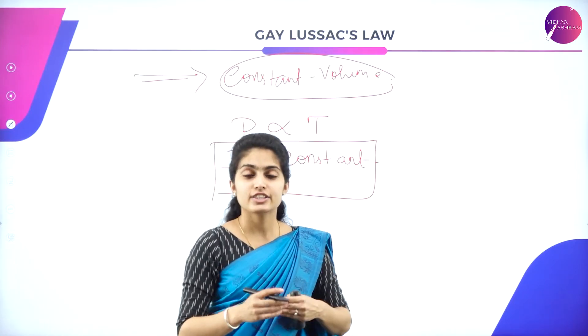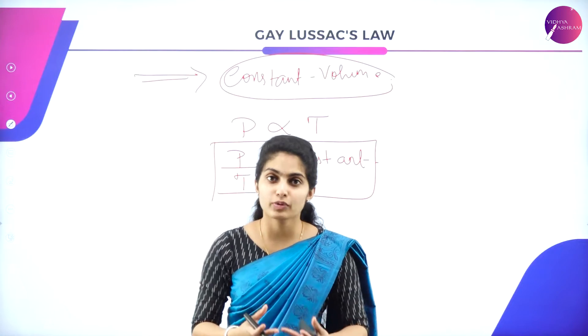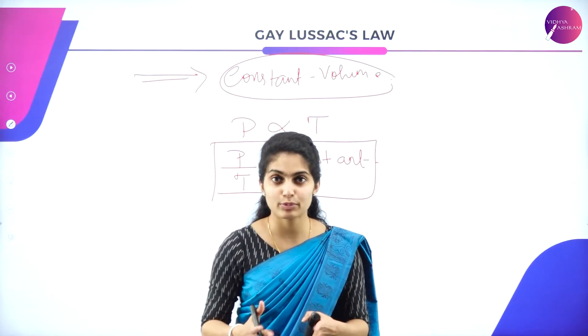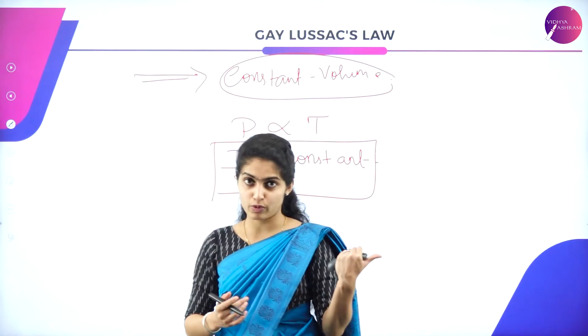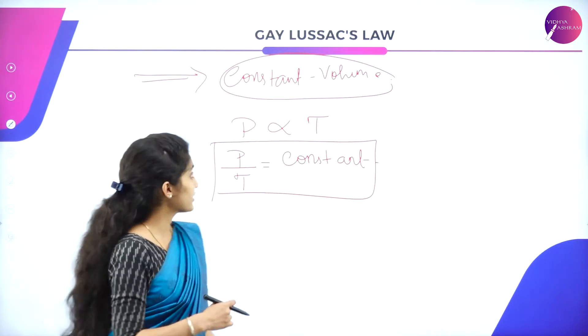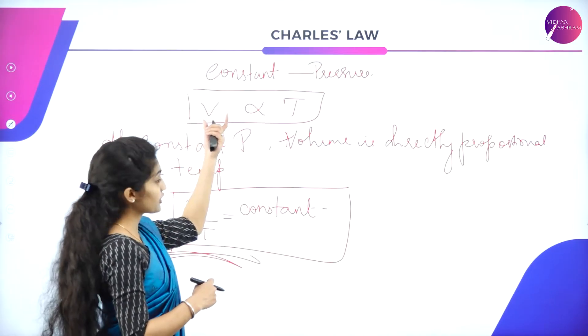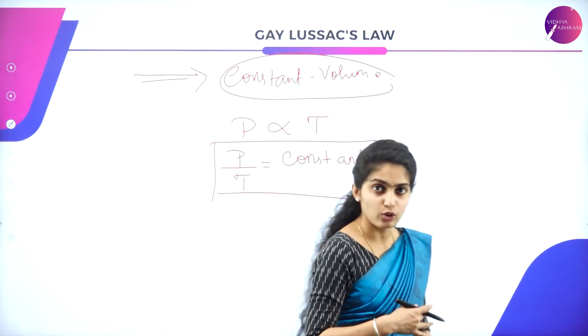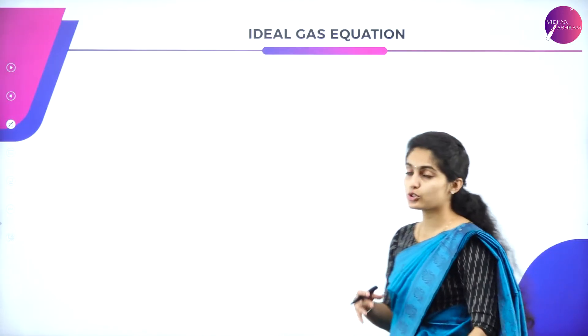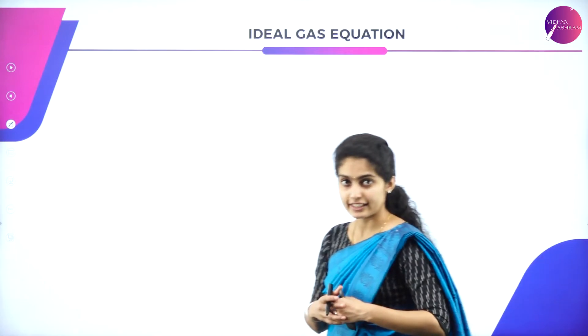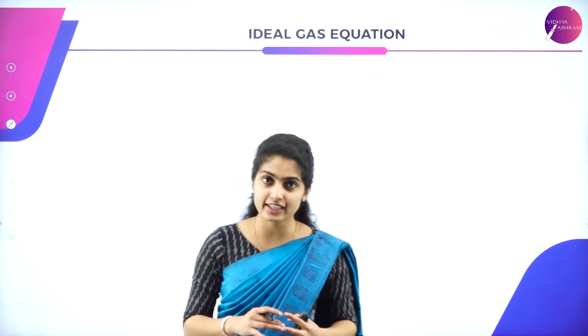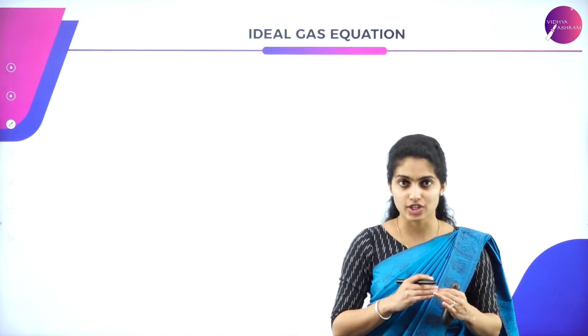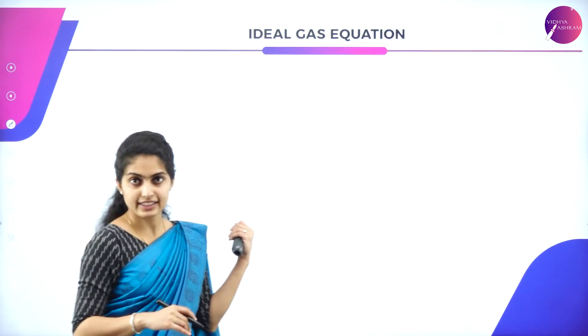To recap: Boyle's law states that at constant temperature, volume is inversely proportional to pressure. Charles' law states that at constant pressure, volume is directly proportional to temperature. The gas which obeys these two laws is considered an ideal gas. An ideal gas is the one which obeys both Boyle's law and Charles' law. Now let us derive the ideal gas equation.